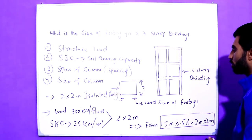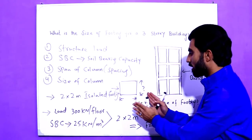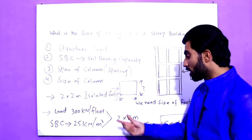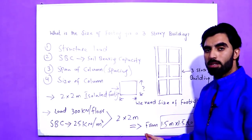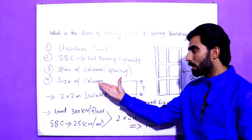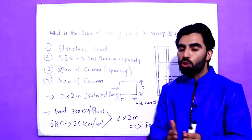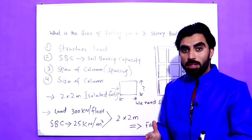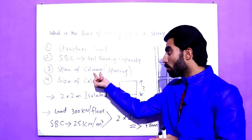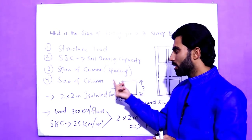You can take a footing size between 1.5 meters and 2 meters for a domestic house, especially for a three-story building. If you keep the footing size too small it can cause problems because it depends on the structure load. Generally, 1.5 to 2 meters is suitable for a residential three-story building. If the column size increases, the footing size should also increase; if the column size is smaller, the footing size can be smaller. Similarly, if the span between columns is more, the footing size should be increased; if the span is less, the footing size can be decreased.